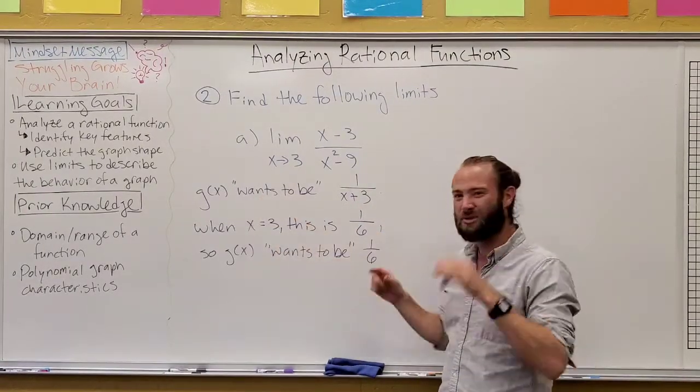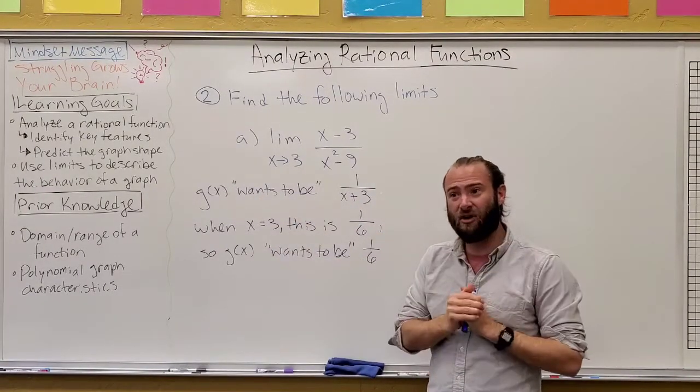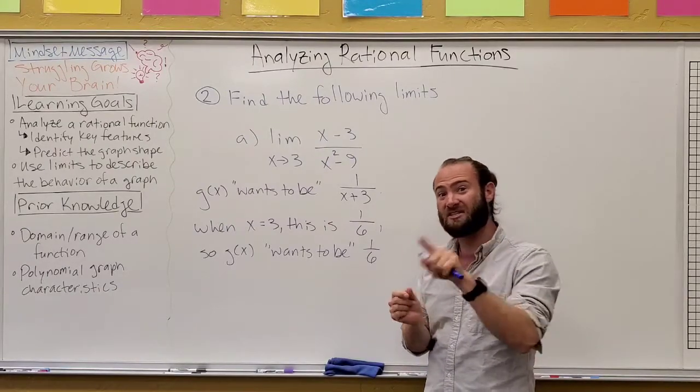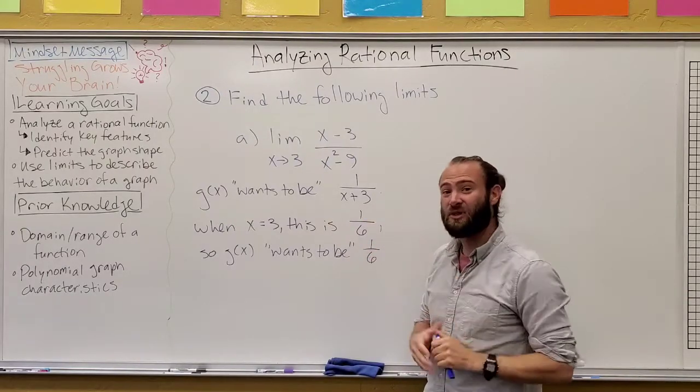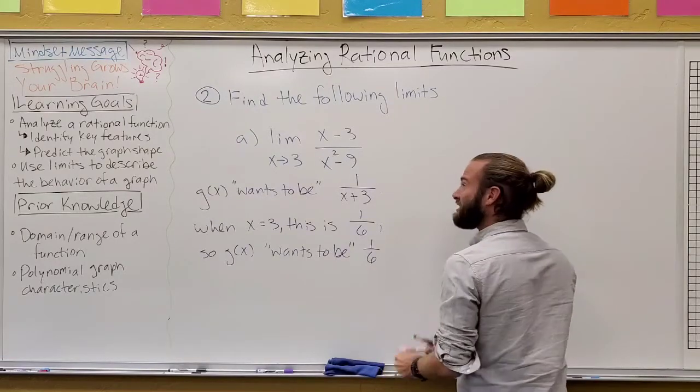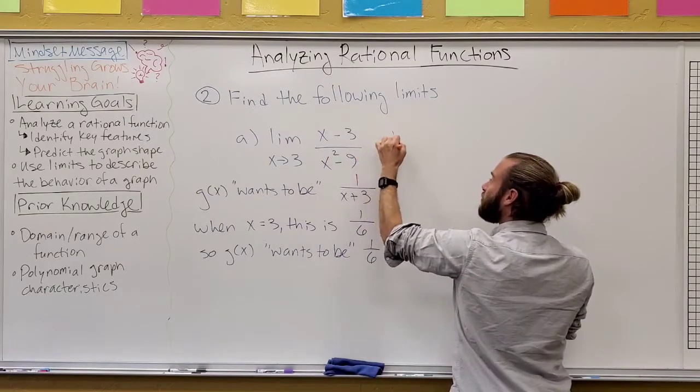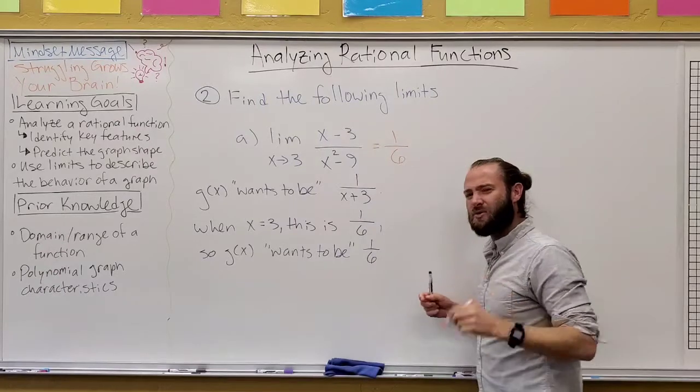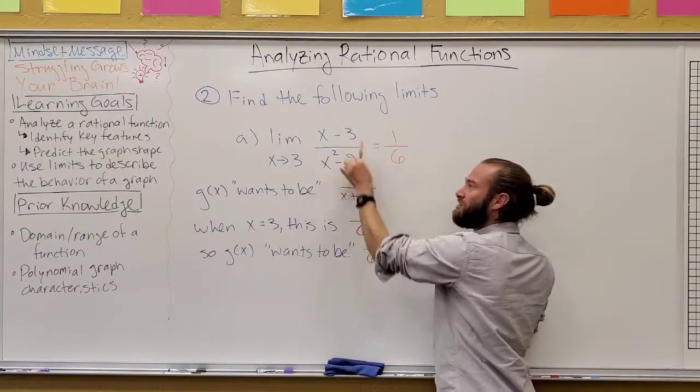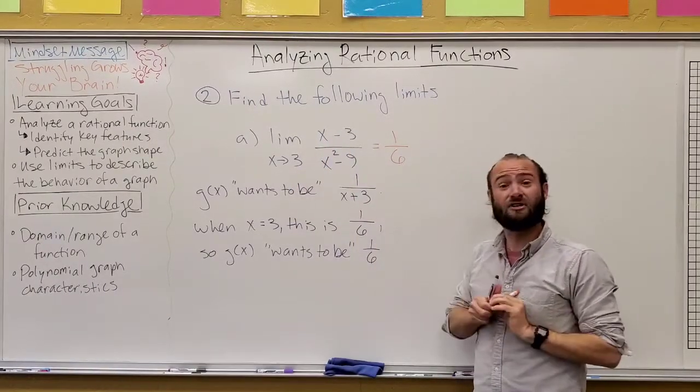So, that means that g of x wants to be one sixth, and if you recall, one over six is point one six six six repeating, and that's what we looked at when we looked at the table. So, the answer for this, the limit is equal to one sixth, and the reason why we can do that is simply because we simplified this and then plugged in three to the simplified version.